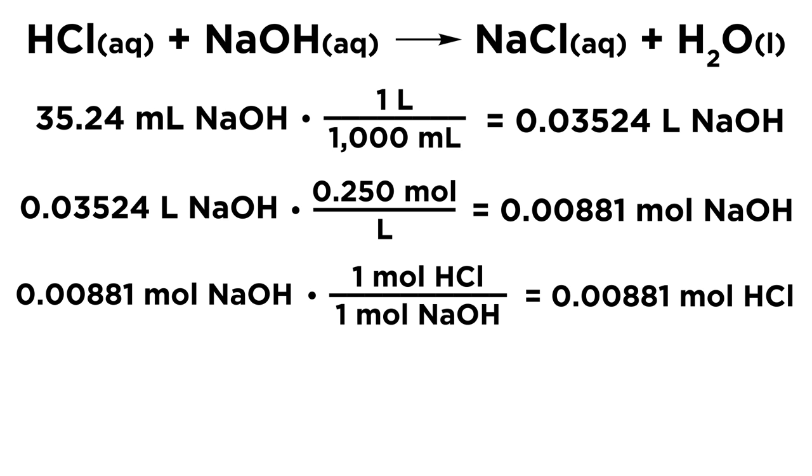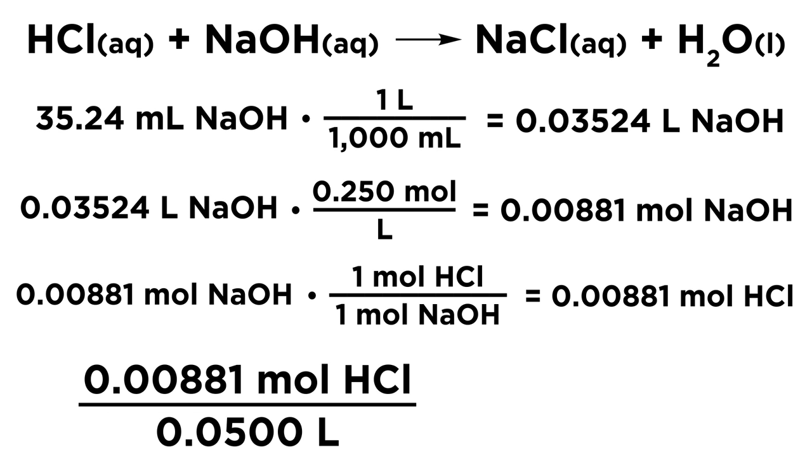So when the equivalence point was reached, that many moles of base had precisely neutralized that many moles of acid, and that is the number of moles of acid that were in the solution initially for the HCl solution. So now all we have to do is convert that many moles of acid into a concentration.